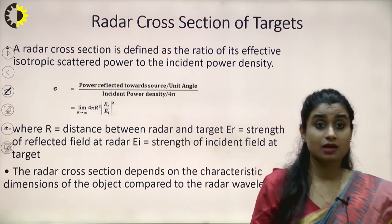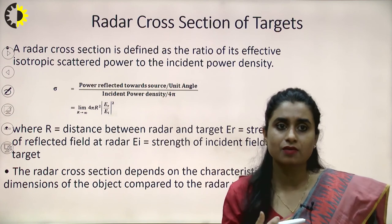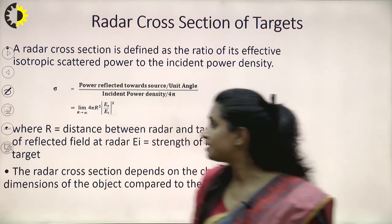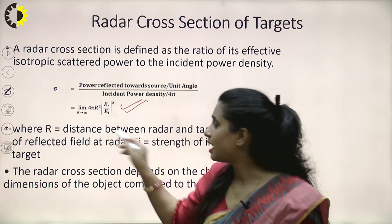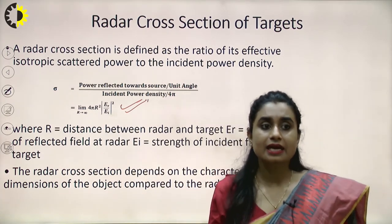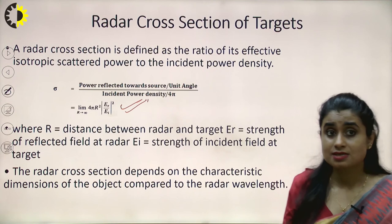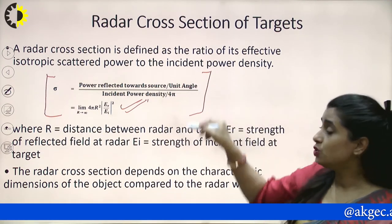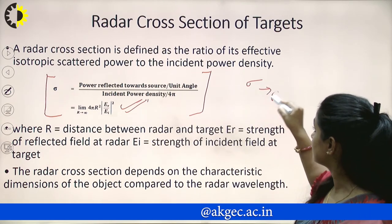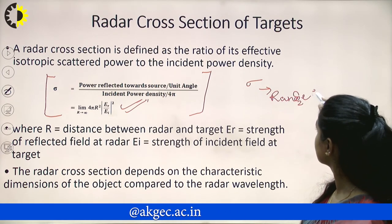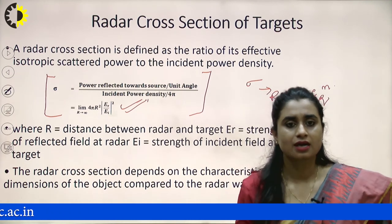The radar cross section of a target is defined as the ratio of its effective isotropic scattered power to the incident power density, represented by the symbol sigma. Mathematically it is expressed in terms of R (the distance between radar and target), Er (the strength of the reflected field), and Ei (the strength of the incident field). Radar cross section is used in radar range equations and depends on the characteristic dimensions of the object compared to the radar wavelength.